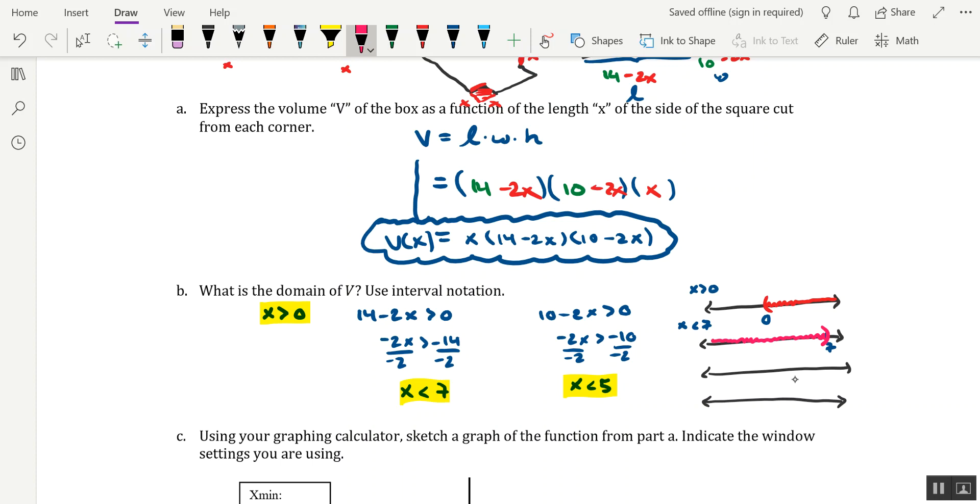And then we need the number line for x is less than 5. So I'll go somewhere between 0 and 7, put a tick mark for 5. And we'll shade to the left of it, all the way down to negative infinity, parentheses on the 5.